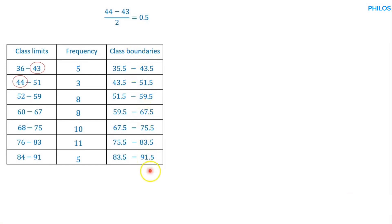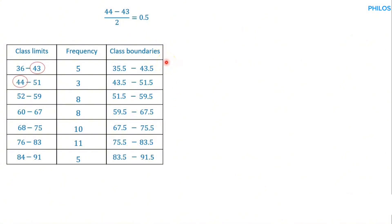That's how to find the class boundaries. Notice something interesting: the upper class boundary of the first class becomes the lower class boundary of the second class, and the upper of that class becomes the lower of the next class — this pattern continues throughout. Now let's look at how to find the class midpoint.